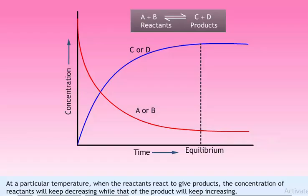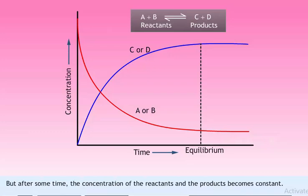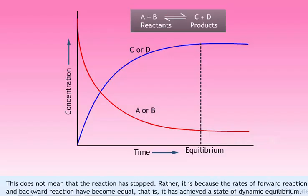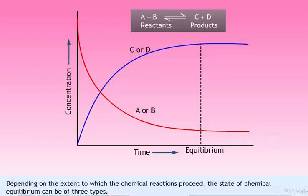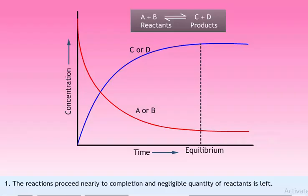The equilibrium concept seen in physical processes can be applied to a chemical reaction as well. At a particular temperature, when the reactants react to give products, the concentration of reactants will keep decreasing while that of the products will keep increasing. But after some time, the concentration of reactants and products becomes constant. This does not mean the reaction has stopped. Rather, it is because the rates of forward reaction and backward reaction have become equal — that is, it has achieved a state of dynamic equilibrium.